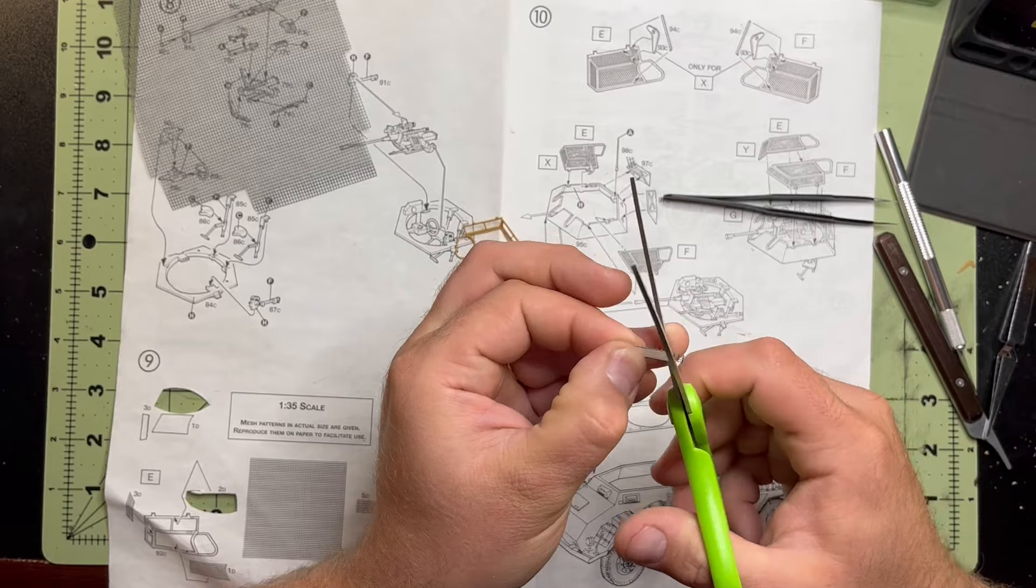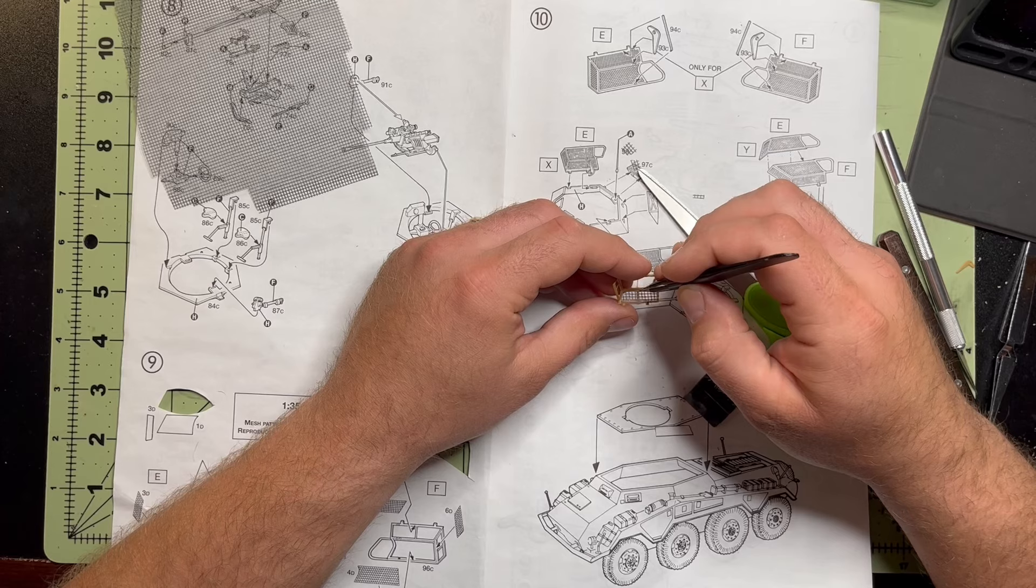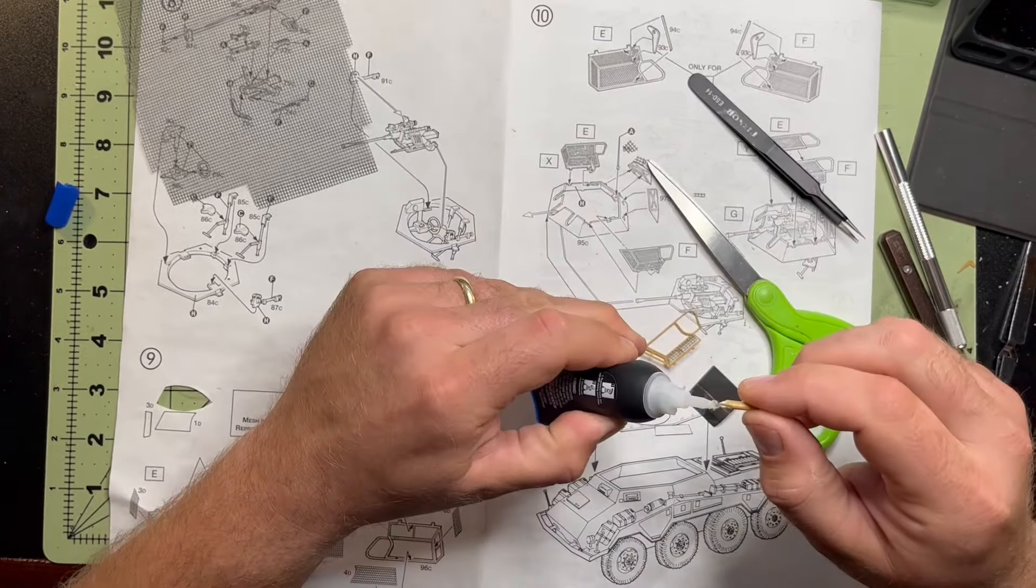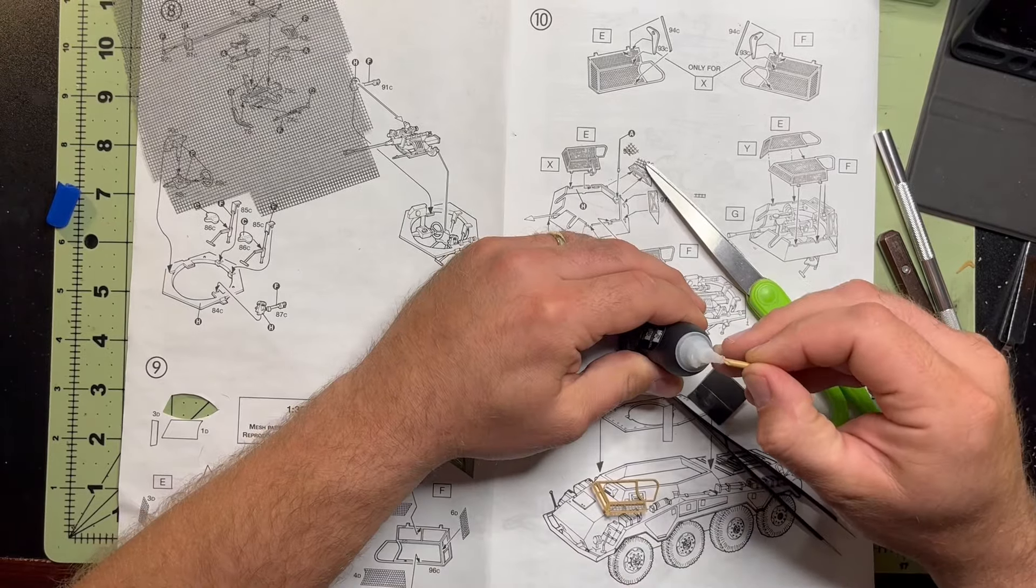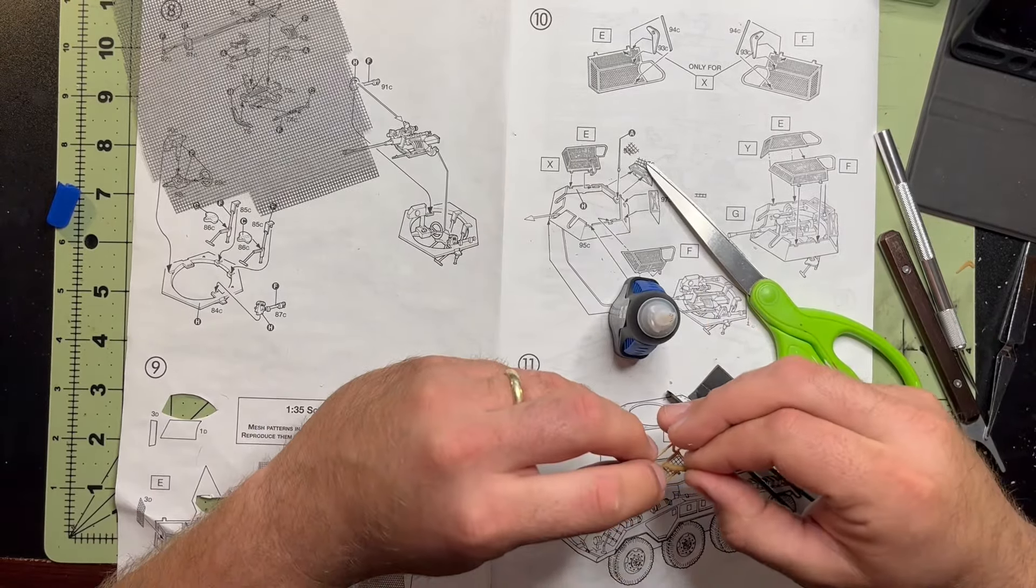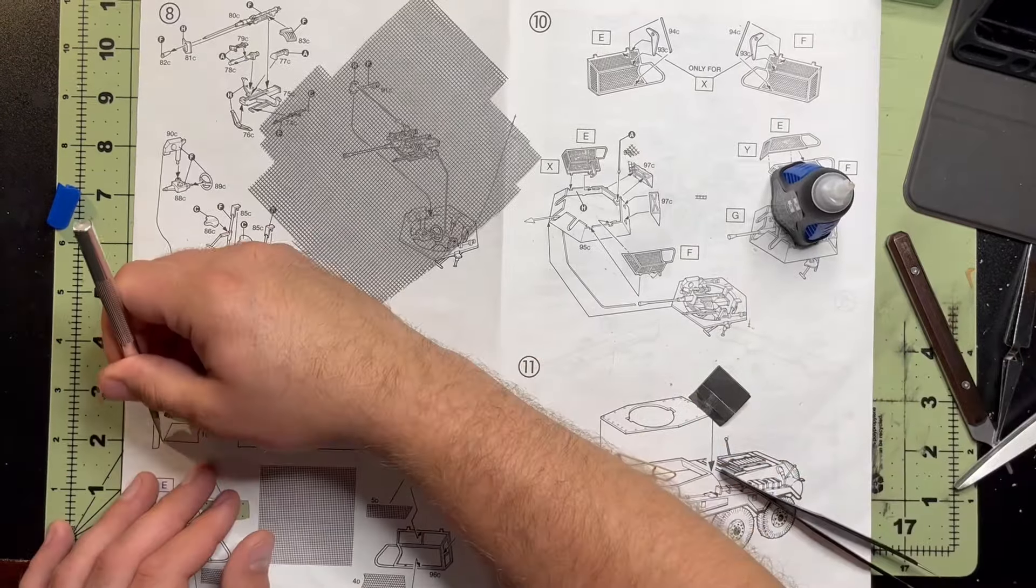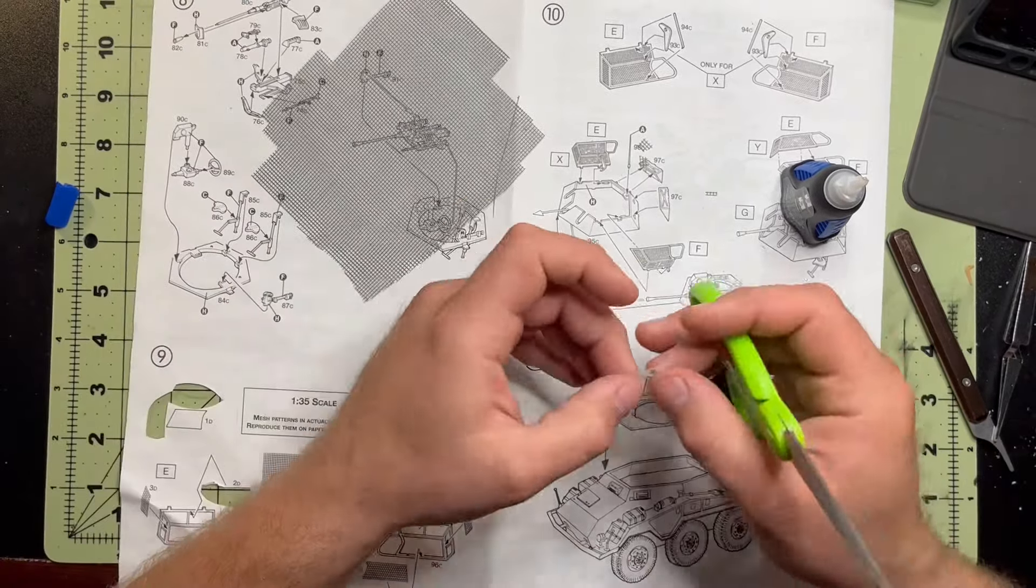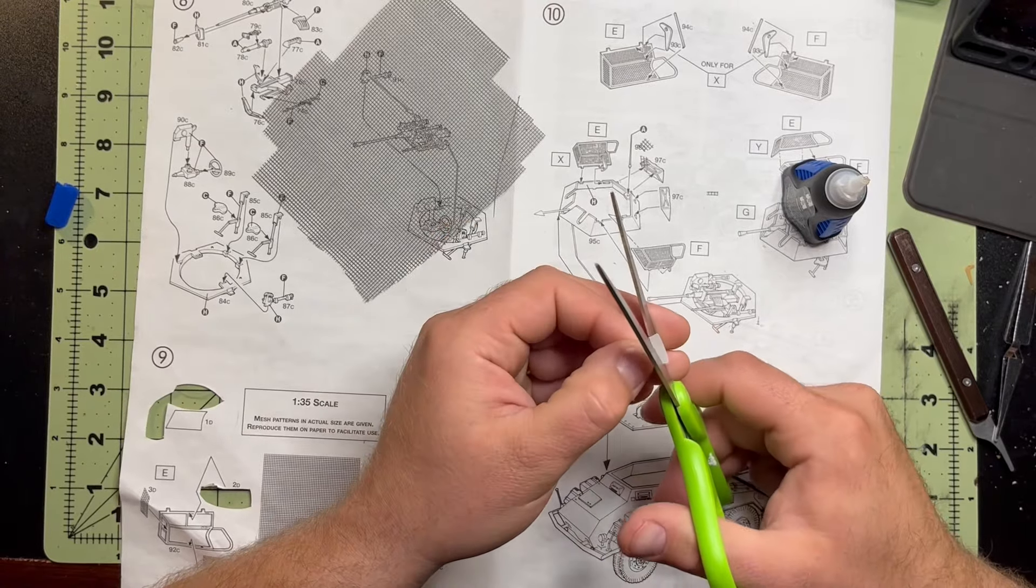So a while back, my dad was replacing his back door on his house and he was going to throw out a big chunk of screen door. And I was like, hey, I'll take it off your hands. And I actually cut it up into little pieces and I use that now mostly for all my mesh wiring stuff on armored vehicles. And it seems to work pretty good. So if any of you guys ever replace an old screen door or window screen or anything like that, keep it because it comes in real handy when you're scale modeling.